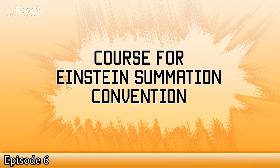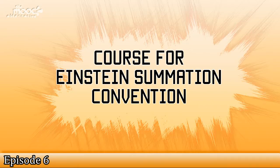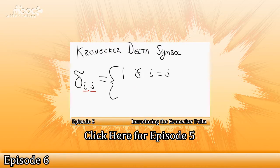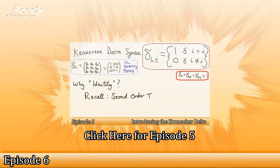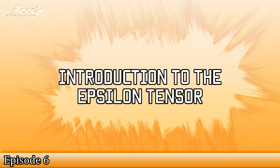Hello, and welcome to episode 6 of our open online course for Einstein Summation Convention. In the last episode, we looked into the Kronecker Delta tensor and the properties that make it useful in the Einstein Summation Convention. Today, we'll have a look at another special tensor, the epsilon symbol.